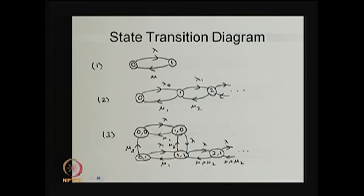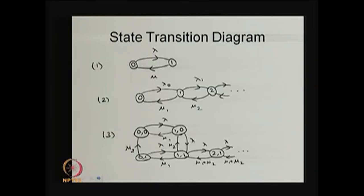Since both states are communicating — both states are accessible from each other in each direction — therefore both states are communicating with each other. Since the state space is {0, 1} and both states communicate, this is an irreducible Markov chain. For an irreducible Markov chain all states are of the same type; for a finite Markov chain we have at least one positive recurrent state, therefore both states are positive recurrent. There is no periodicity for the continuous time Markov chain, so both states are positive recurrent and the chain is irreducible.